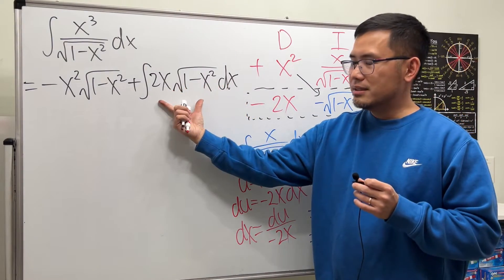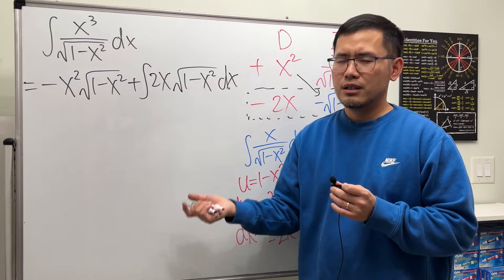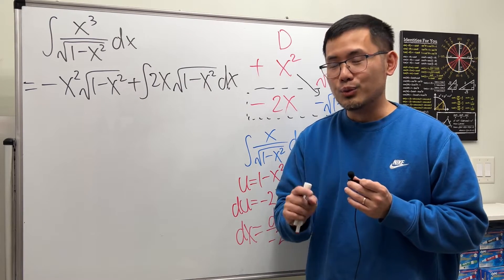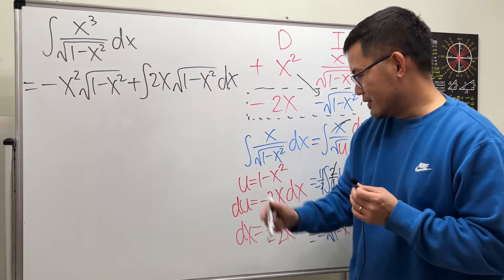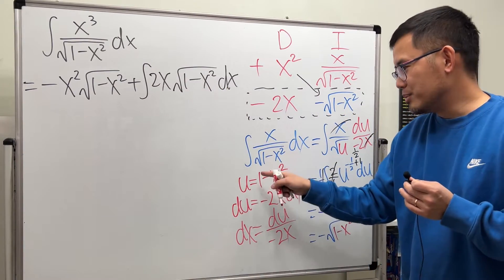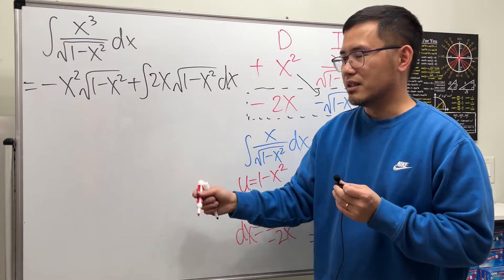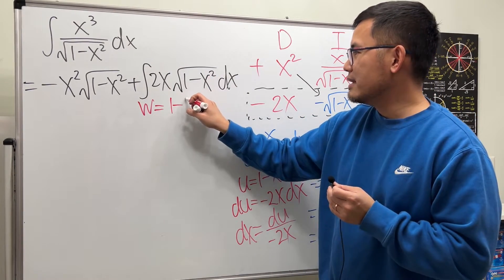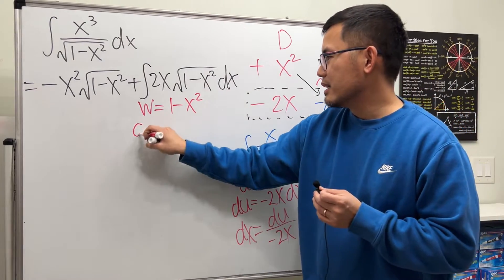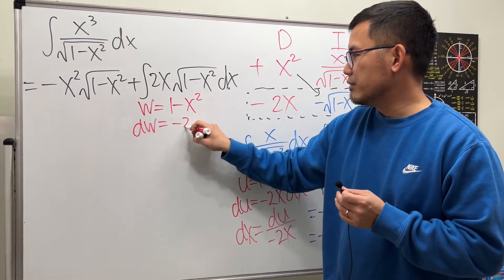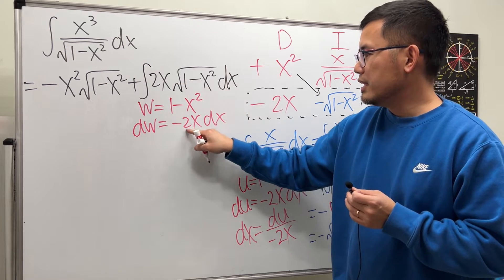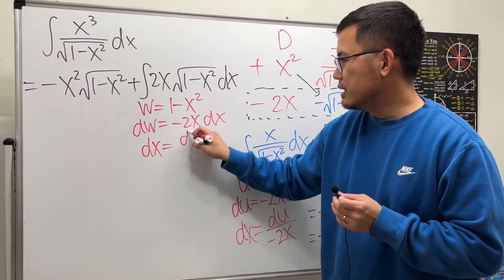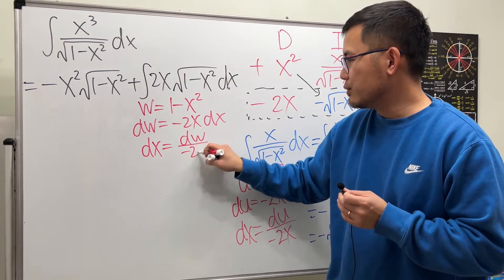Now, this is the last integral we have to do. Can we do it? Yes. How? u sub. u sub is enough. But since I used u right here, even though it's going to be the same thing, I'm going to pick another letter. Let's say w. Pick w to be the inside, 1 minus x squared. It's the same thing. So go ahead. dw equals negative 2x dx. Divide this on both sides. We get dx equals dw over negative 2x.